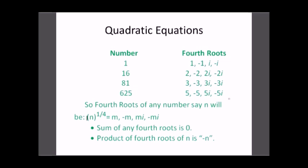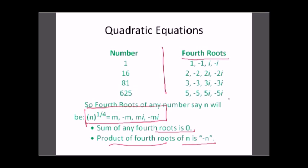Similarly, fourth roots of unity have their own relationships given by the formula. This relationship is valid for the fourth root of any number. The sum of any fourth roots is always equal to zero, and the product of the fourth root of n is always equal to minus n. You should know these relationships related to fourth roots.